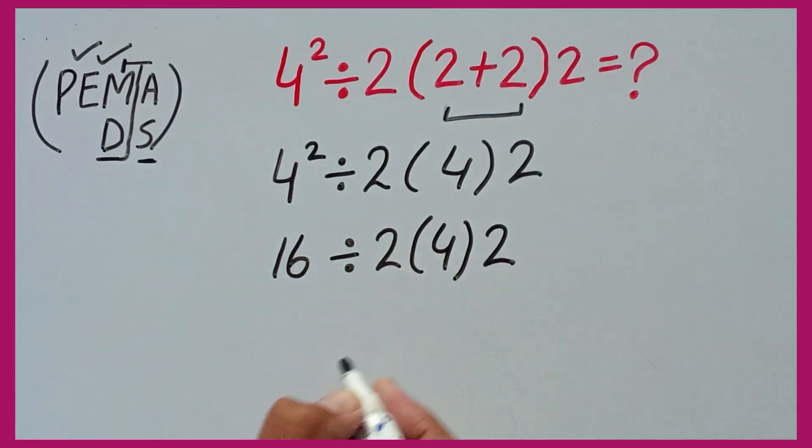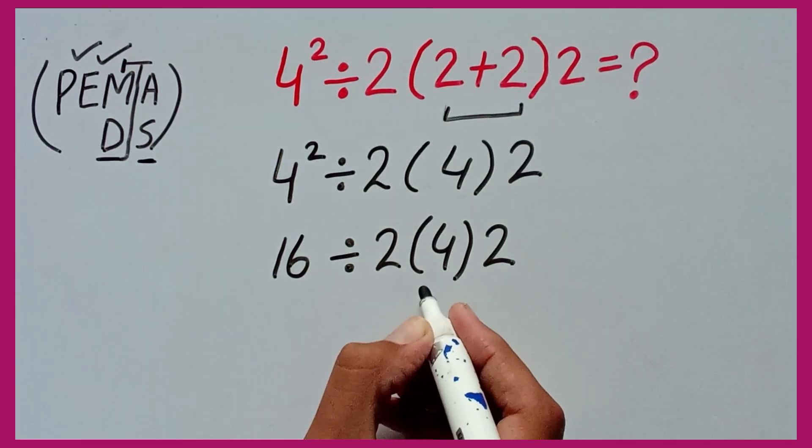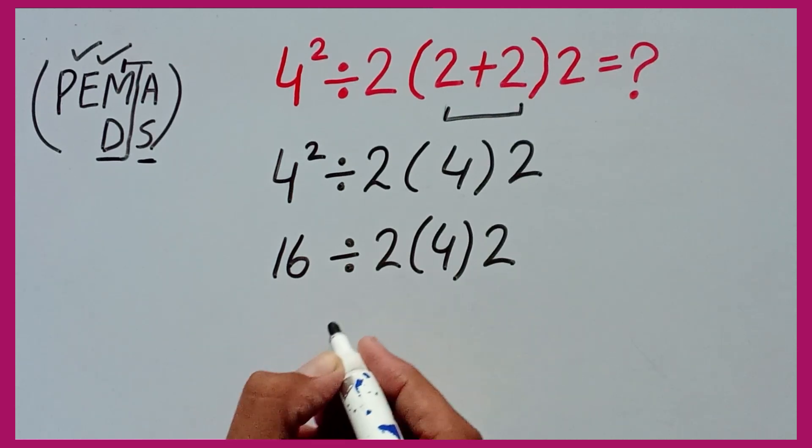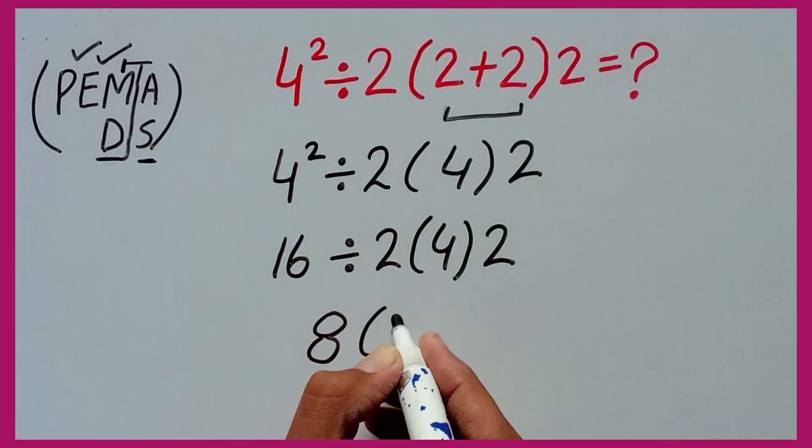Now in the next step, division and multiplication have equal priority and we have to solve from left to right. So firstly we can solve division, so 16 divided by 2 equals 8, and 8 times 4